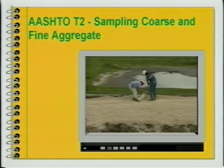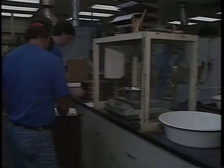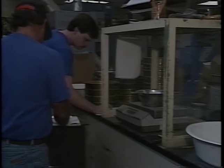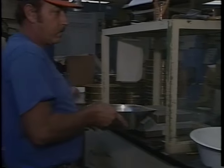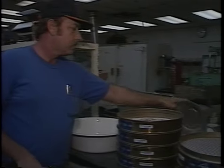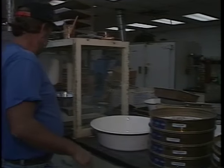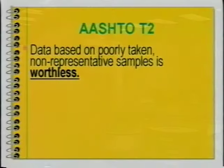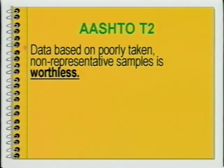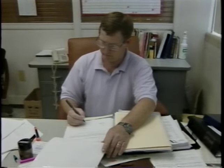AASHTO T2 Sampling, Coarse and Fine Aggregate. The data resulting from tests on aggregate samples can only be valid if the samples used in the testing are accurate representatives of the quality and characteristics of the entire aggregate batch. Data based on poorly taken, non-representative samples is worthless. This data may mislead engineers, producers, and highway contractors, resulting in costly mistakes.